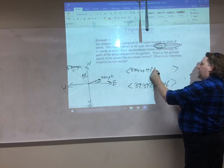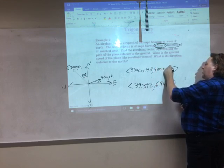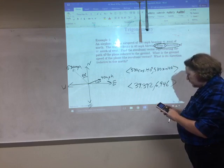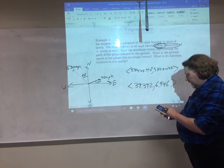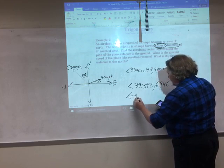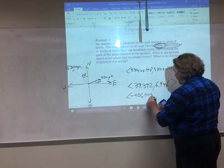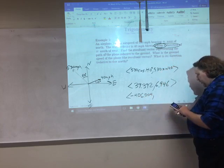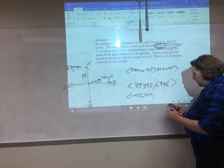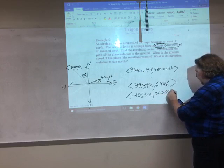And then 530 sine of 140 degrees for the y component. So 530 cosine of 140 gives me an x component of negative 406.004. And a y component, 530 sine of 140 degrees, 340.667.